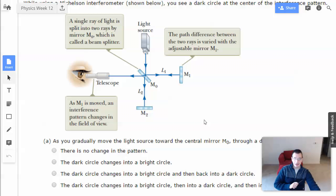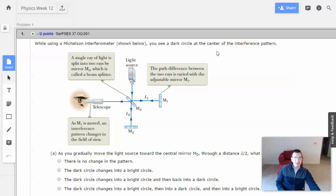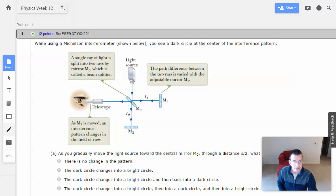So you see a dark circle at the center of the interference pattern. This guy right here, right there. That guy's key.